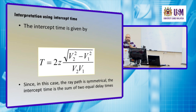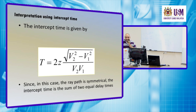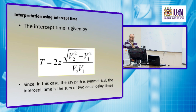Can you try, Azim? The depth z is supposed to be: z = (V1 × t_i) / (2 × sqrt(V2² − V1²)). Correct.